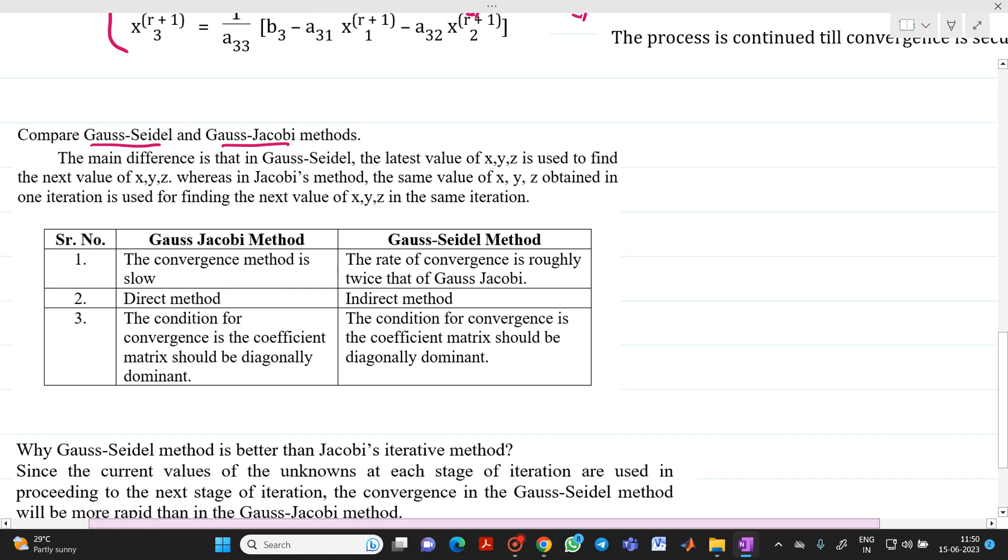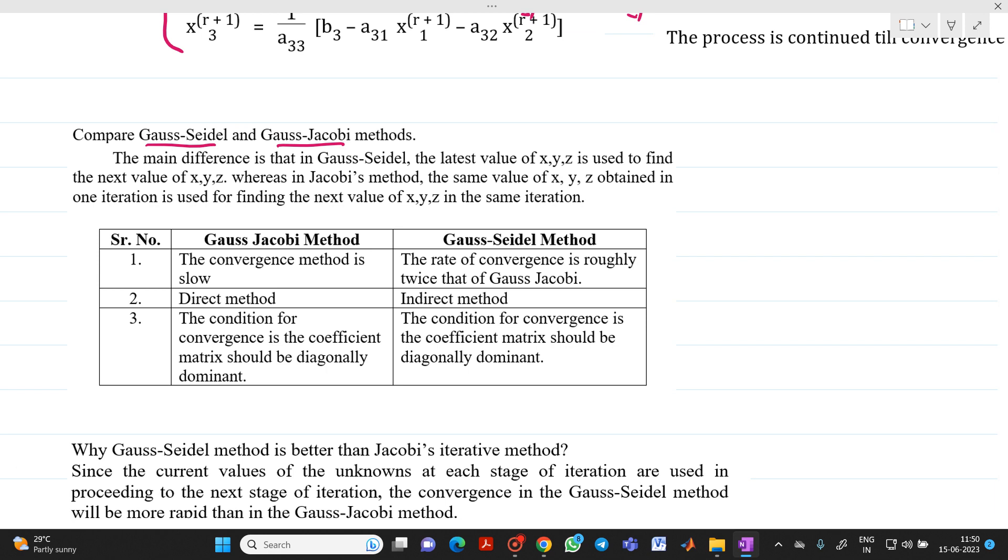The main difference is that in case of Gauss-Seidel method, the latest value of x, y, z is used to find next value of x, y, z. Whereas in case of Gauss-Jacobi method, same values of x, y, z obtained in the one iteration is used for finding the next value of x, y, z.